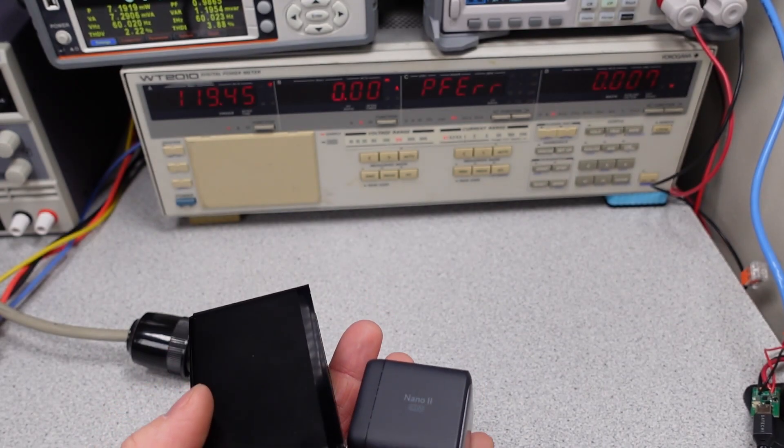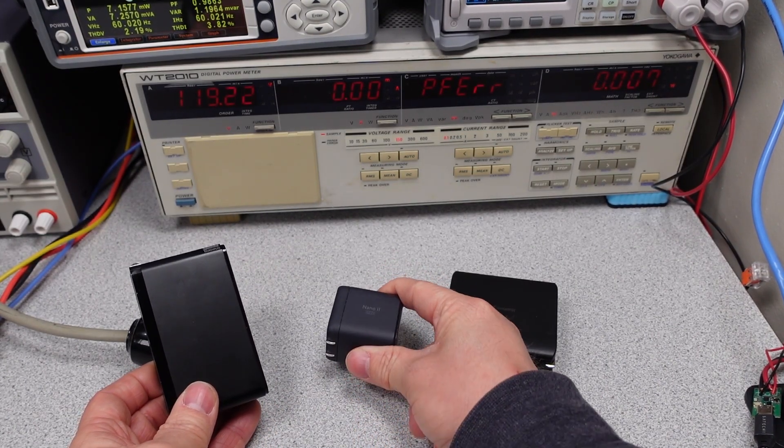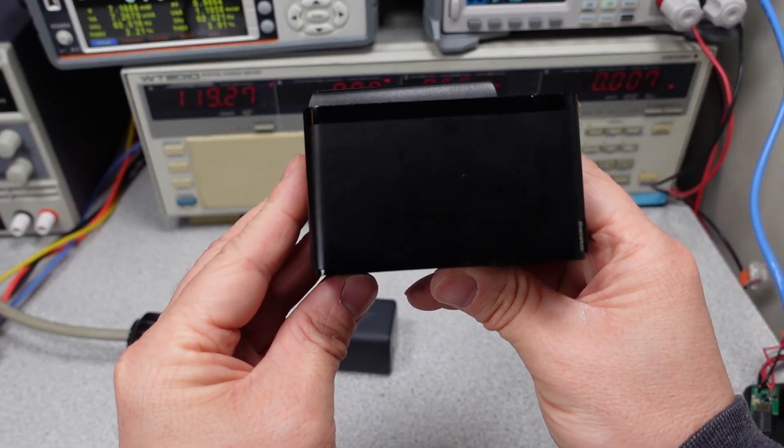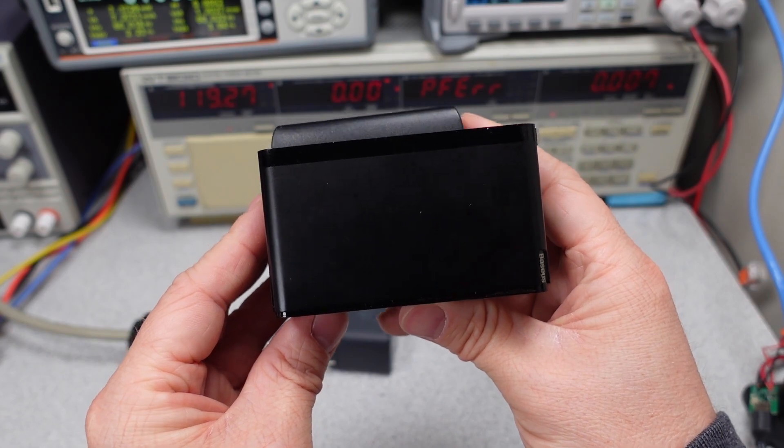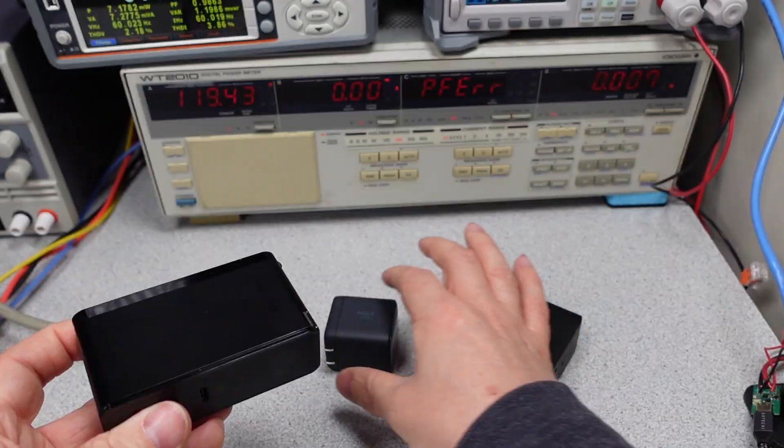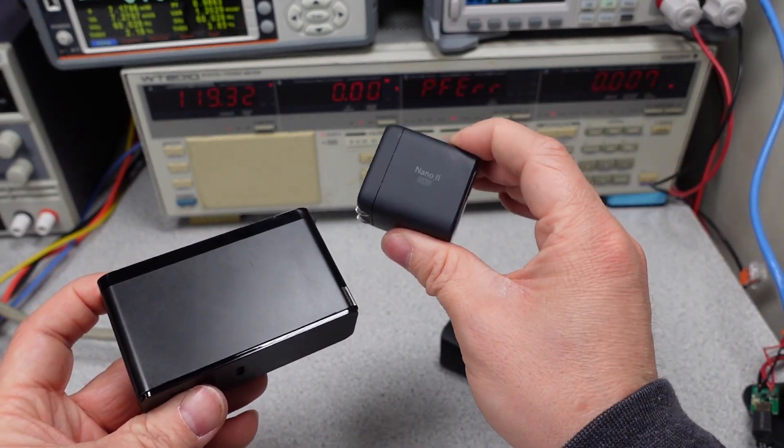Just some comparisons for size. Here we have the 120 watt adapter. Here's the Anker Nano 2 65 watt adapter. And here's the HyperX 100 watt adapter. You can see that it's comparable in size to the 100 watt HyperX power adapter, but they are different. The Nano 2 is quite a bit smaller than both of these power adapters, but it's also only 65 watts.